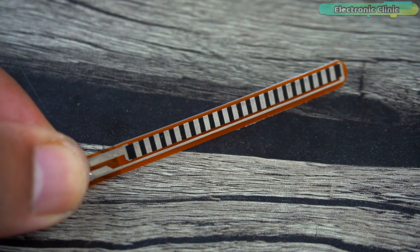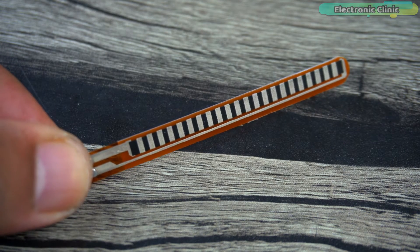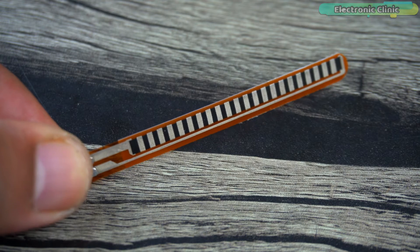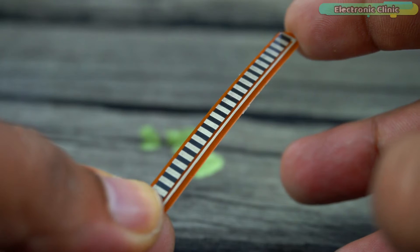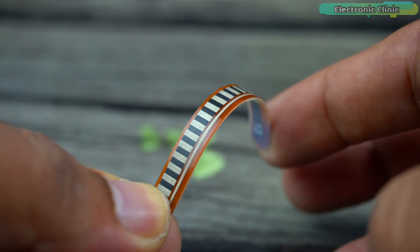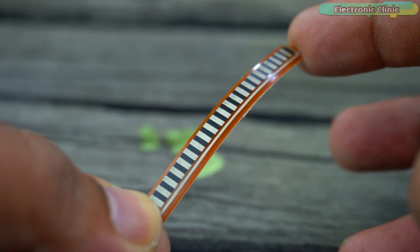A flex sensor, also known as a bend sensor, is a type of sensor designed to detect bending or flexing in a physical structure, such as a flexible material or object. These sensors are primarily designed to measure the degree of bending or curvature in various applications.